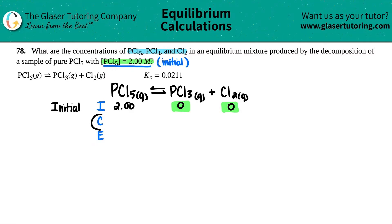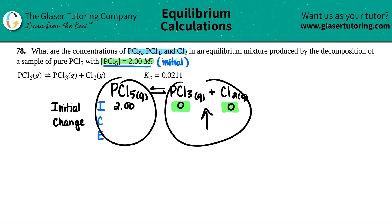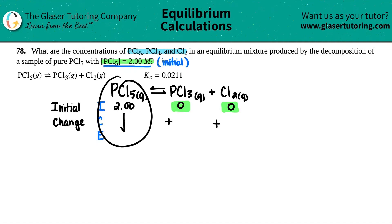The C in ICE stands for Change — this shows how concentrations shift to reach equilibrium. Since PCl3 and Cl2 start at zero, they can only go up; no such thing as negative molarity. So the products increase (plus) and the reactant decreases (minus). All coefficients are one, so the changes are −x for PCl5 and +x for each product.